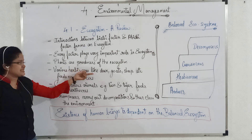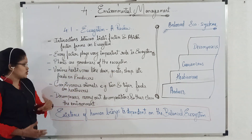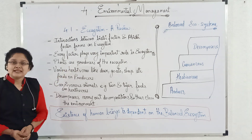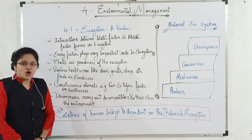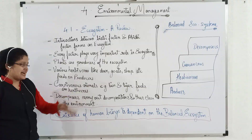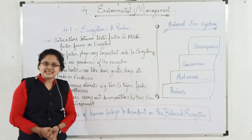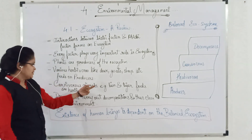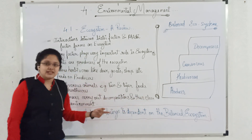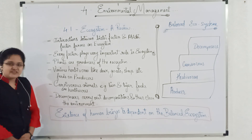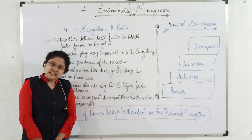After that, there are some herbivorous animals like deer, goat, sheep, etc., which depend on producers or plants. After that, there are some carnivorous animals like lion, tiger, etc., which feed on the herbivorous animals. And after the death of the carnivorous animals, the decomposers present in our environment decompose the dead body and thus clean the environment. So remember this point: the existence of human beings is dependent on a balanced ecosystem.